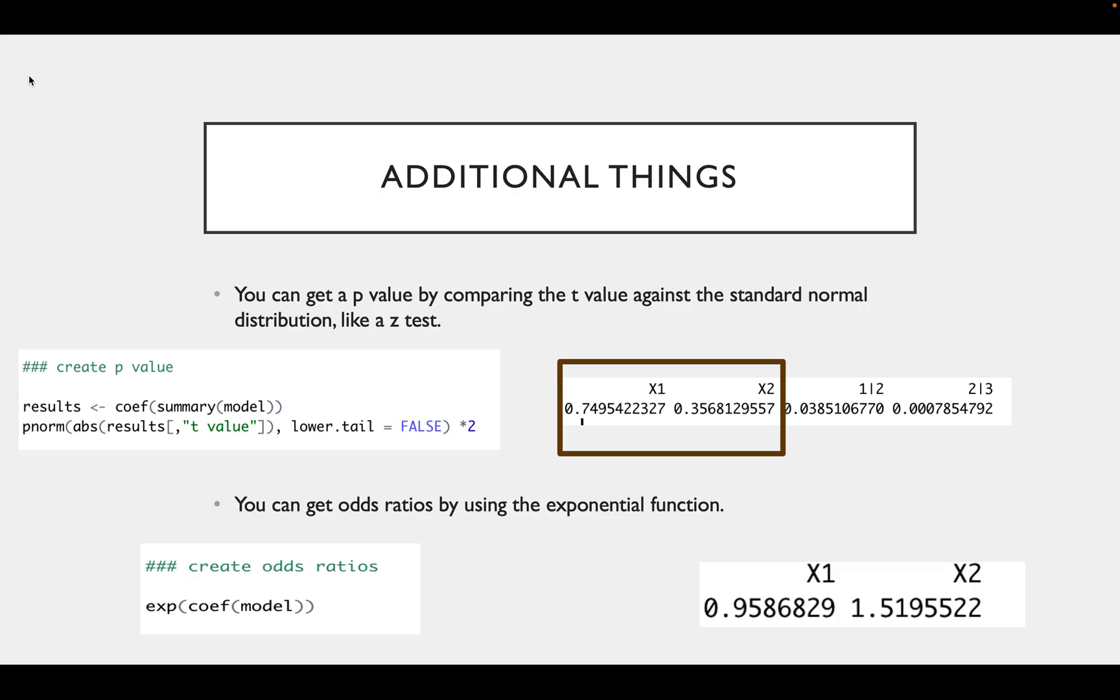You can also get the odds ratios by using the exponential function on the coefficients of the model. Odds ratios that are greater than one suggest an increase in likelihood, like our variable two. And odds ratios less than one mean a decrease in likelihood, just like our variable one.